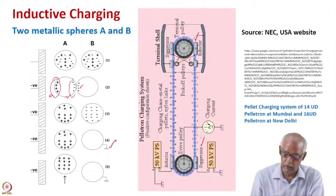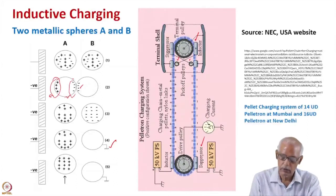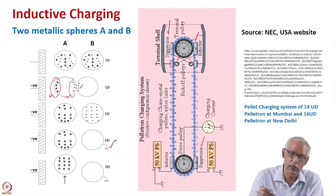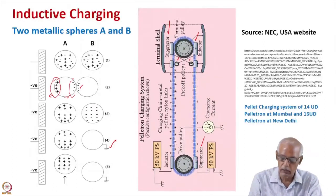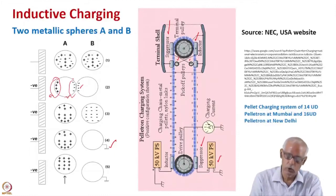There is one more suppressor here because negative charge is coming down. When the pellet chain comes in contact with the pulley, there will be sparking, so in order to suppress that there is a suppressor here. Because of these two suppressors — one in the high voltage terminal and the other applied at around 50 kV — there is no sparking either at this place or the other due to charge movement.